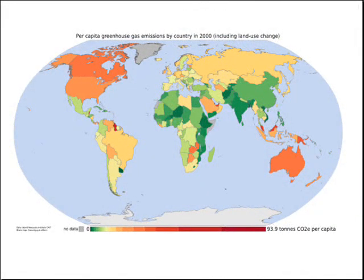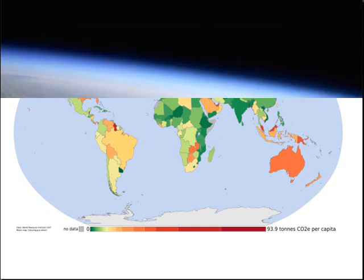This is how per capita greenhouse gas emissions by country for the year 2000 look. It is clearly seen that the most developed regions, like North America and Australia, emit larger amounts of greenhouse gases.